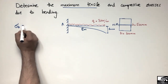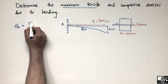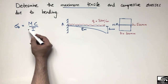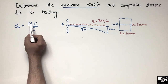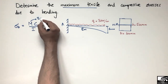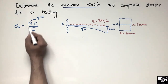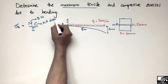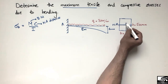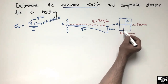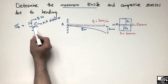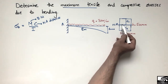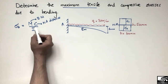We can find out bending stresses using the formula σ = Mc/I. This formula is used to find bending stresses in any type of beam. M is the bending moment at the point where you want to find the stresses. C is the distance from the neutral axis — c1 is the distance from the neutral axis to the top of the beam, and c2 is the distance to the bottom of the beam.